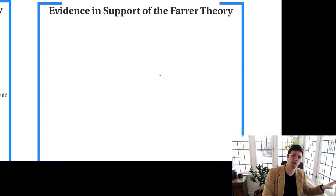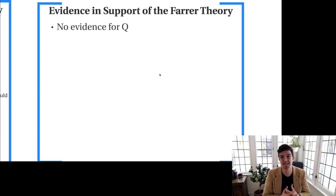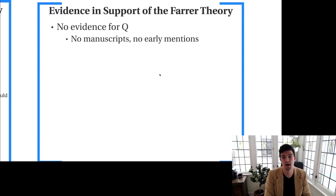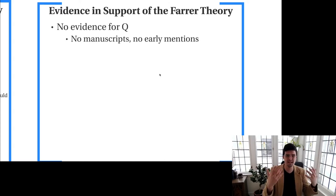That is some of the best evidence in support of the two-source theory. Now here is the evidence in support of the Farrer theory. Perhaps the best evidence is that there is absolutely no tangible evidence for Q whatsoever. We have no manuscripts of Q, no manuscript fragments of Q, and there is no early mention of Q in the patristic writers. Whereas figures like Augustine remark on how the different gospels were composed, and other patristic writers do the same, none of these writers mention another document that sounds anything like what scholars purport Q to be.